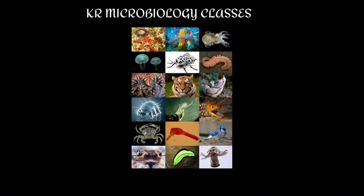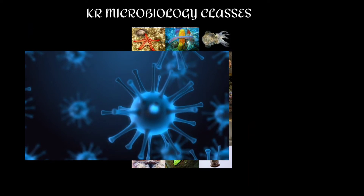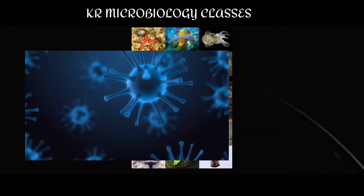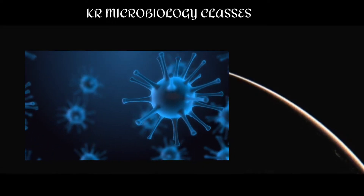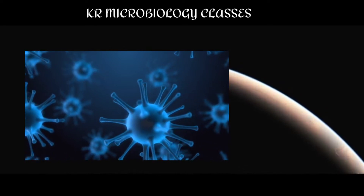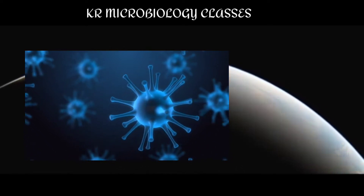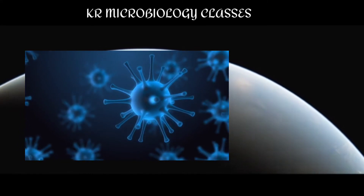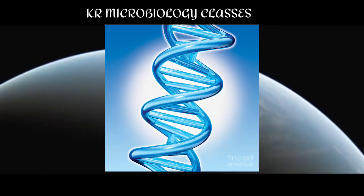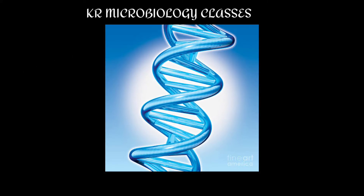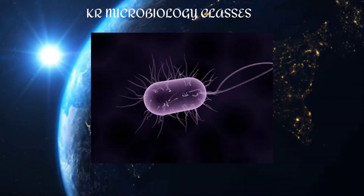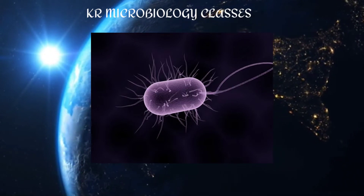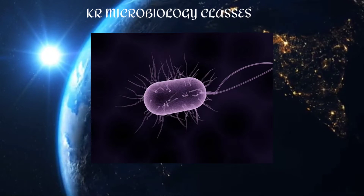From the microorganisms which are not seen with the naked eye, up to human beings — a very complex living organism — life evolved. Each and every science student should know that from microorganisms only, life was started. But how was that microorganism created? At the time of formation of Earth, it was nothing but accumulation of dust and gases from the solar nebula.